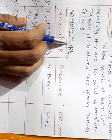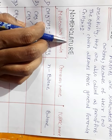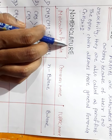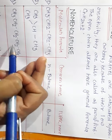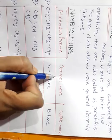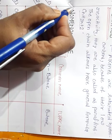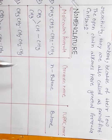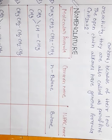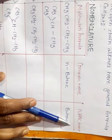Our next topic is Nomenclature of Alkanes. We will study both common names and IUPAC names. Nomenclature is very important for your final examination — there are a lot of questions from common names as well as IUPAC names, so you have to study them carefully.